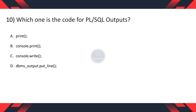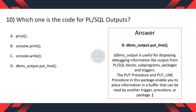Question 10. Which one is the code for PL/SQL output? A. Print function. B. Console.print function. C. Console.write function. D. DBMS_OUTPUT.PUT_LINE function. And the correct option is D, because DBMS_OUTPUT is useful for displaying information like output from PL/SQL blocks, subprograms, packages, and triggers. The PUT and PUT_LINE procedures in this package enable you to place information in a buffer that can be read by another trigger, procedure, or package.